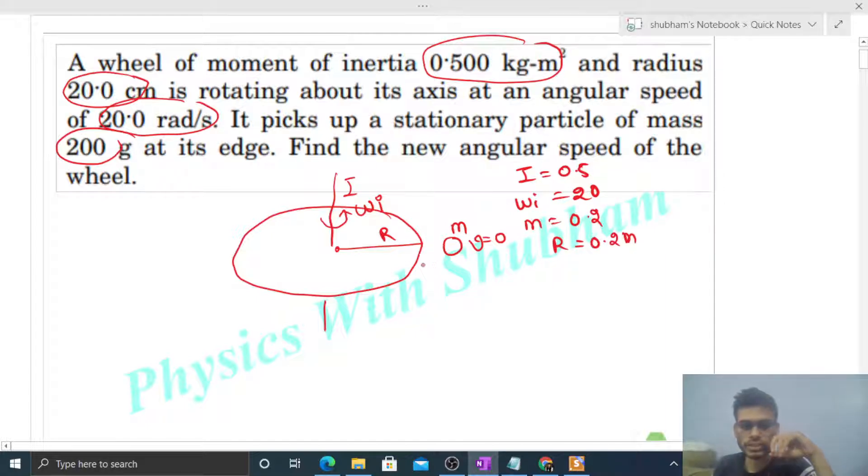So first, let me define my system as this wheel plus particle. This is my system. What is the initial angular momentum of the system? You can see it will be I into initial omega, because the particle has no angular momentum about this axis because it is not moving, it's stationary.